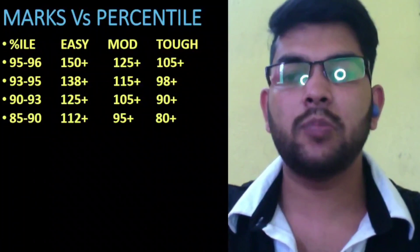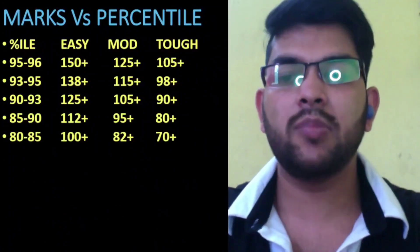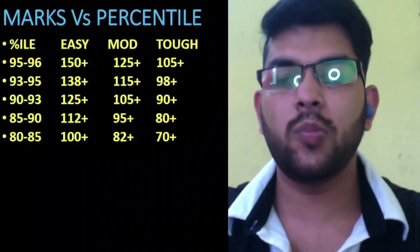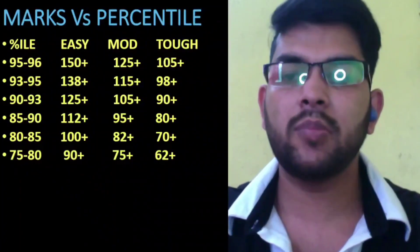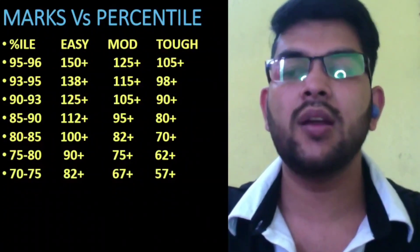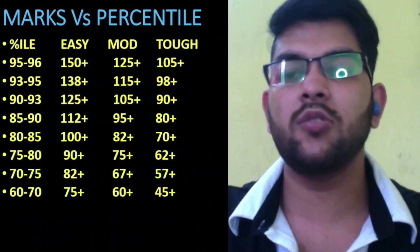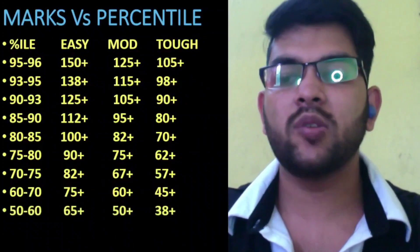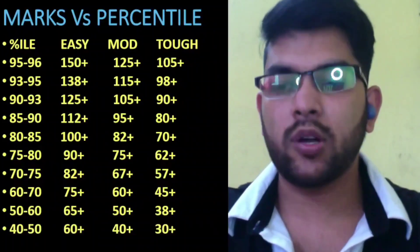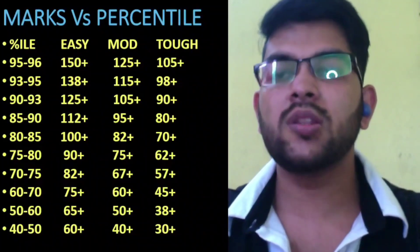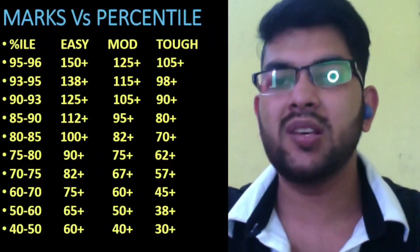For 85 plus percentile, your marks would be 95 plus. For 80 plus percentile, your marks would be 82 plus. For 75 plus percentile, your marks would be 75 plus. For 70 percentile, your marks would be 67 plus. For 60 percentile, your marks would be 60 plus. For 50 plus percentile, your marks would be 50 or more. For 40 plus percentile, your marks would be 40 or more.